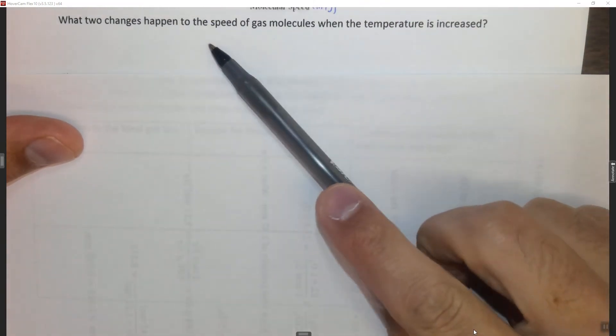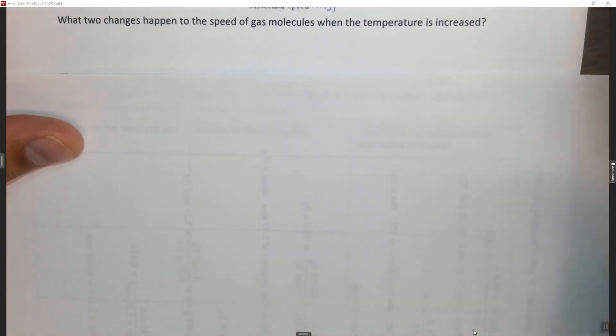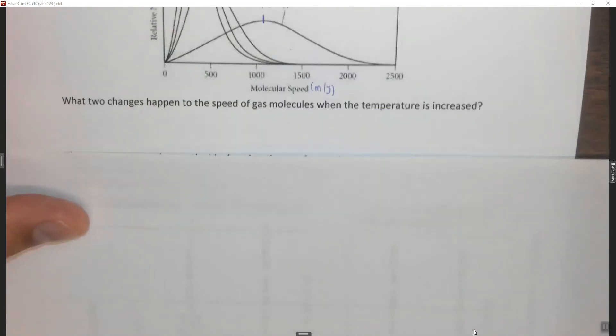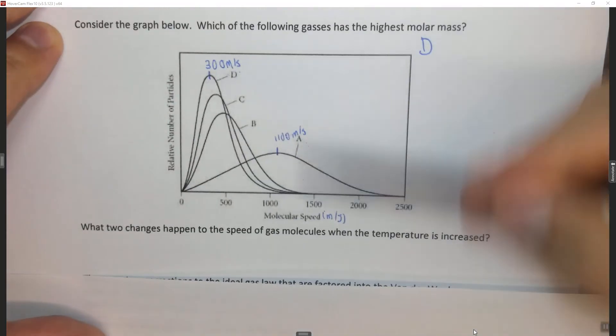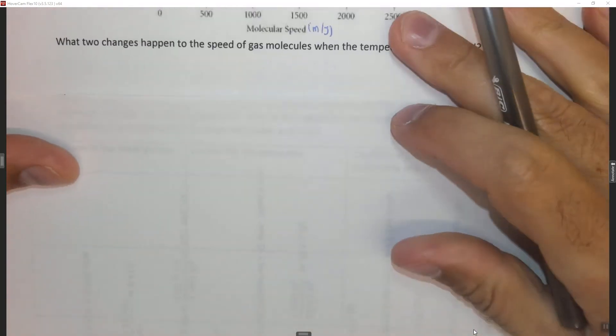All right, it says what two changes happen to the speed of gas molecules if the temperature is increased? If you haven't watched the previous question with the distribution, you might want to do that first.